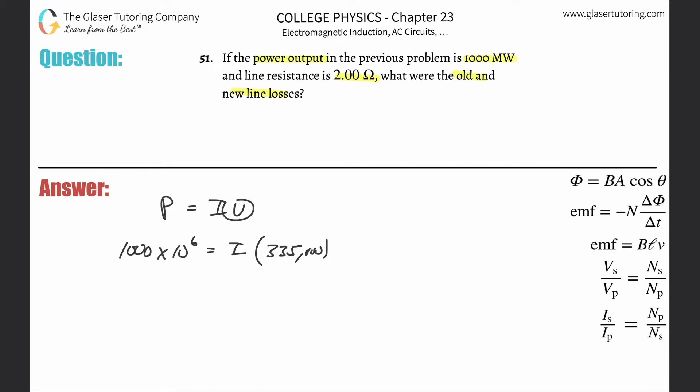Remember, output power, output current, output voltage, we are consistent, right? So therefore, I know what I'm calculating here is going to be the output current. So we're going to take the 1000 times 10 to the 6th, divided by 335,000. And I get an answer of about 2.9.